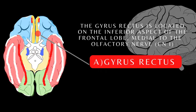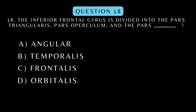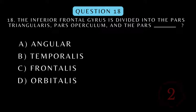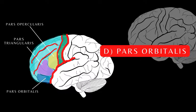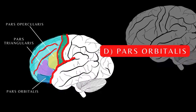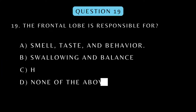The inferior frontal gyrus is divided into the pars triangularis, pars operculum, and pars blank. The frontal lobe is responsible for?